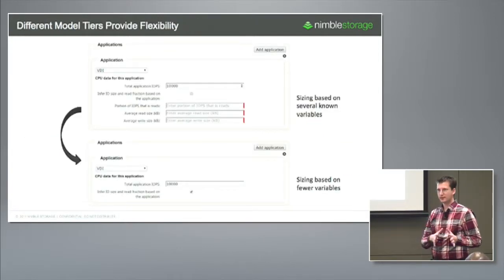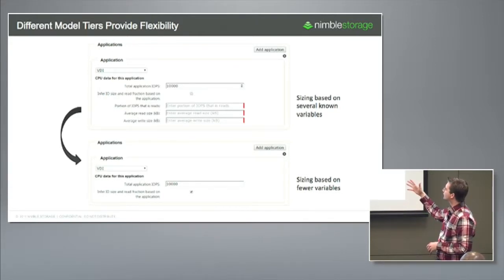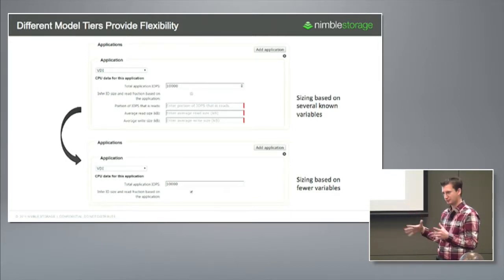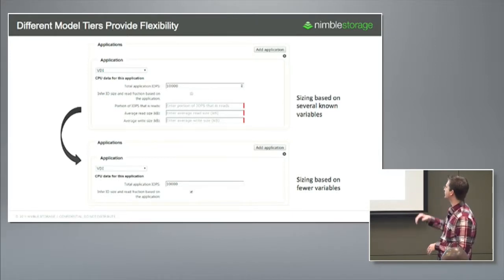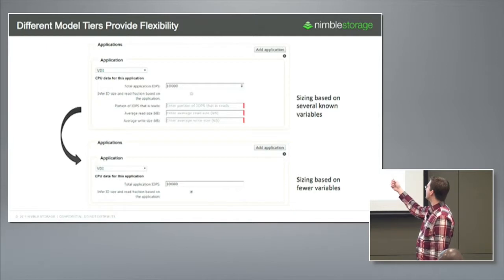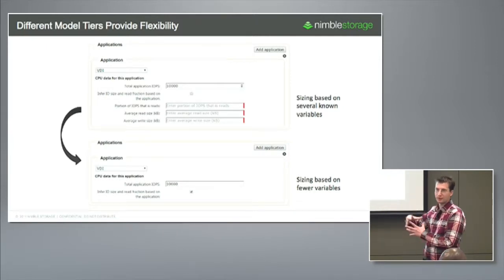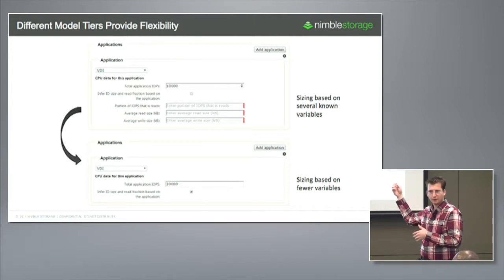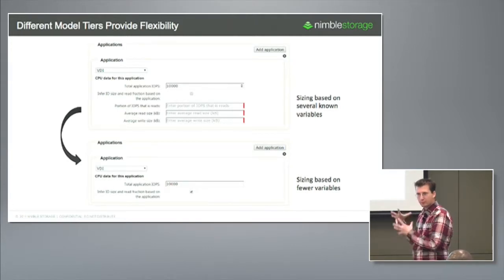Because we can apply different models with different levels of complexity, we have the flexibility to allow users of the tool to insert a lot of data and get a more precise estimate, or less data and get ballpark estimates with larger error bars. For example, if you just give us VDI IOPS, we'll look at the install base and understand what a VDI IOPS looks like. But if you've done a POC and know what your profile looks like, you can add that information in directly as well.